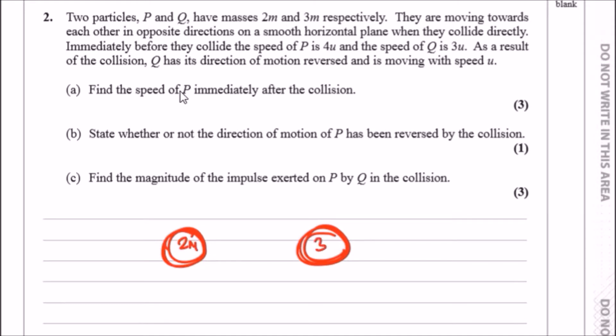They're moving towards each other in opposite directions. So P is moving towards Q and Q is moving towards P, and they have speeds 4u and 3u respectively. That's from here.